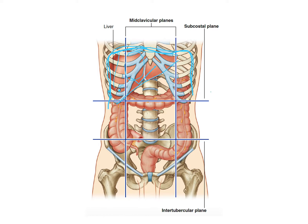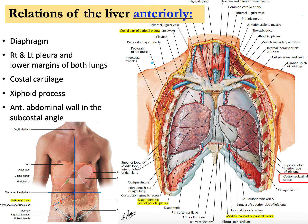Anteriorly you can see the costal cartilage and the xiphoid process and so forth. Let's start talking about the anterior relation of the liver. First of all, look at this figure — I will try to draw the liver here. So this is a shadow of the liver.